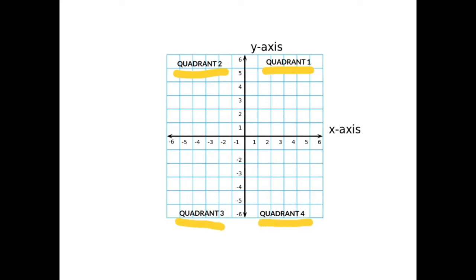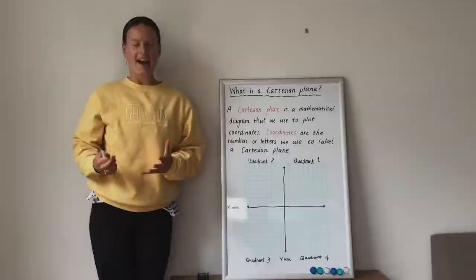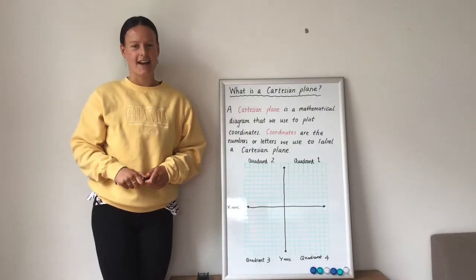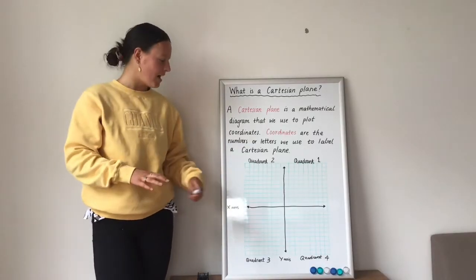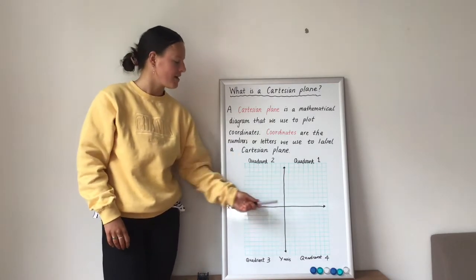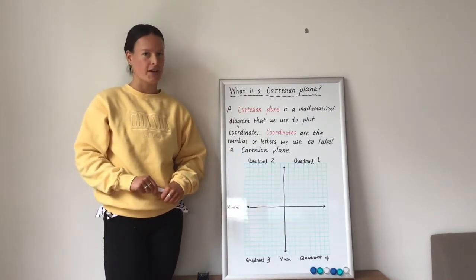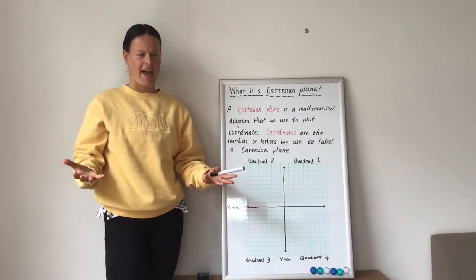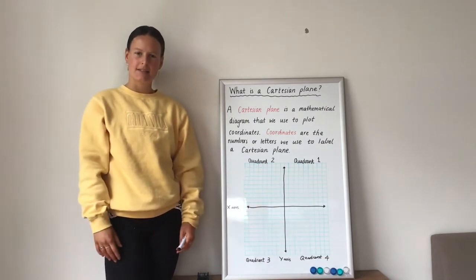And I've also labeled my x-axis and my y-axis. Now, when we label our x-axis and our y-axis, we can't just label them all with numbers, you know, 1 to 10, 1 to 10. Because then if I needed to locate an object and I had all of the same numbers on my axes, it wouldn't really make sense.